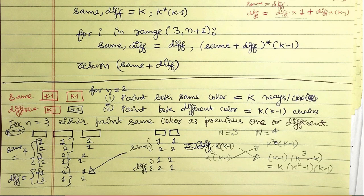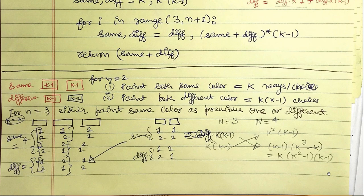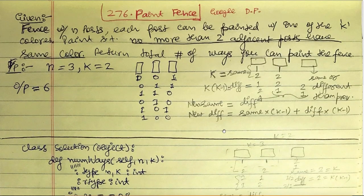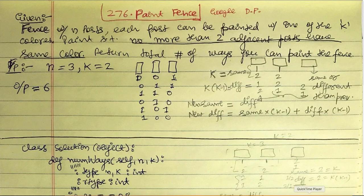For k=2 and n=3, the formula k^3 - k gives 2^3 - 2 = 8 - 2 = 6, which matches the six combinations we enumerated in our first example. I suggest you play with this example a few times until the question becomes clear.